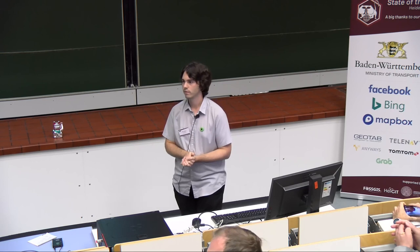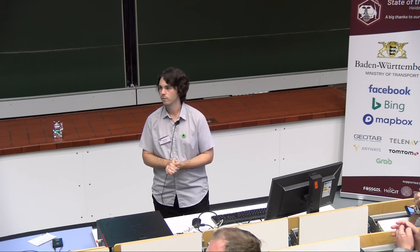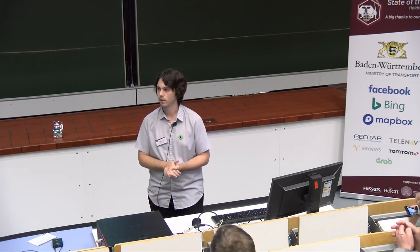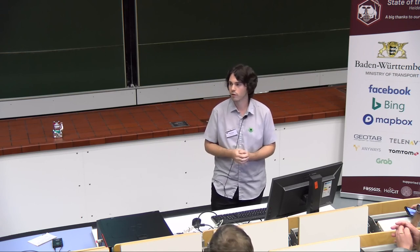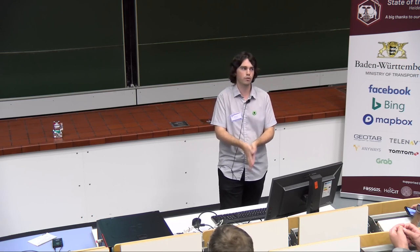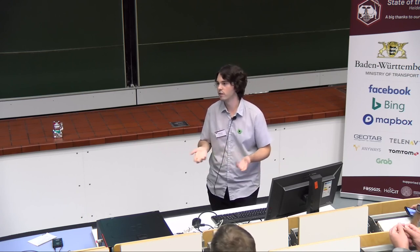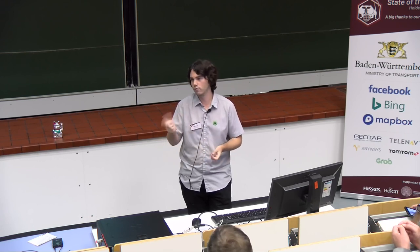An audience member asked whether points are sometimes in areas with no street imagery, making validation difficult. The speaker replied that it can happen sometimes, but most of the time features are found in pictures because the open data is not that bad. The most common issue is a lack of precision — the feature exists but may be 50 meters away from its listed position, which causes problems finding it in pictures. The idea is to handle the easy 90% of cases, while the remaining complex cases require manual inspection.